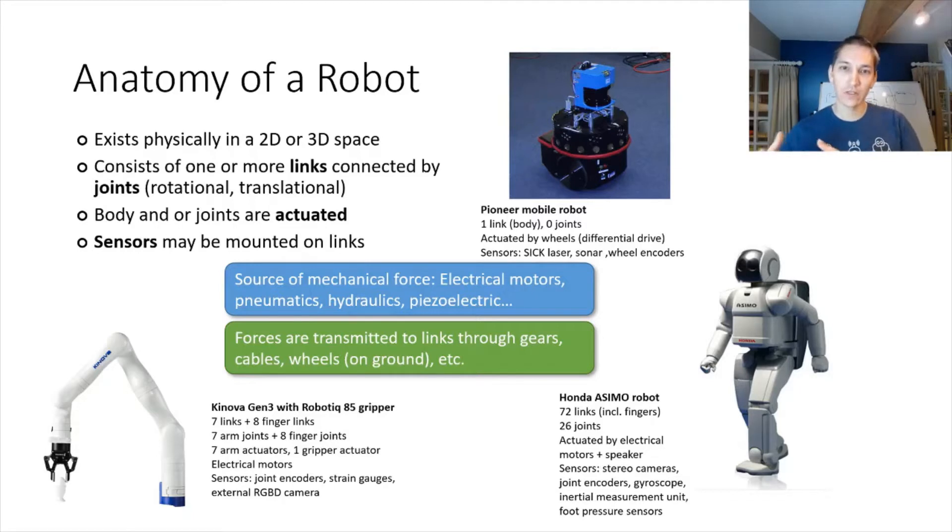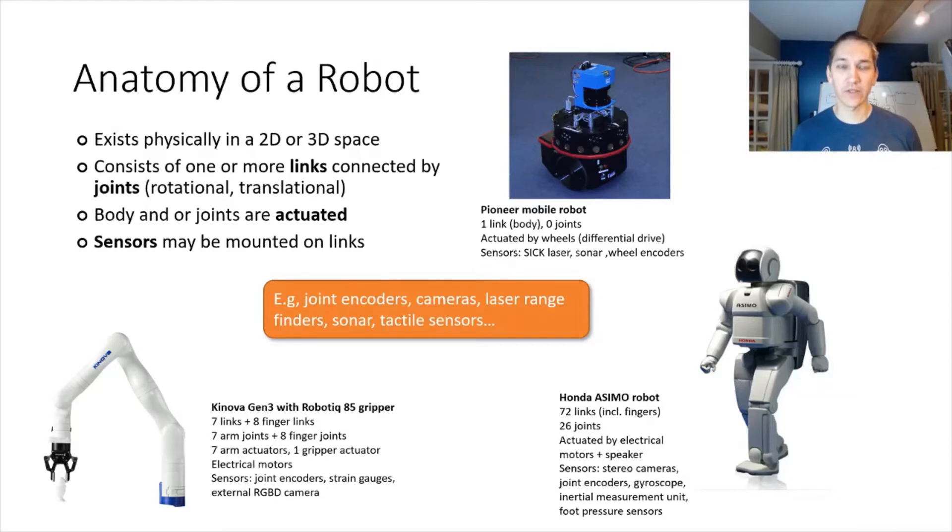The forces are then transmitted to the links through the gearbox or through a cable drive system, or also wheels on the ground. Finally, we require some sort of sensors to be mounted on the links. Joint encoders, for example, provide a sense called proprioception, where the robot can tell where it is in space. Vision is provided through cameras. Cameras are very cheap, and they provide very rich sources of information to most robots. But we can also have other forms of sensors like laser rangefinders, sonars, tactile sensors, etc.